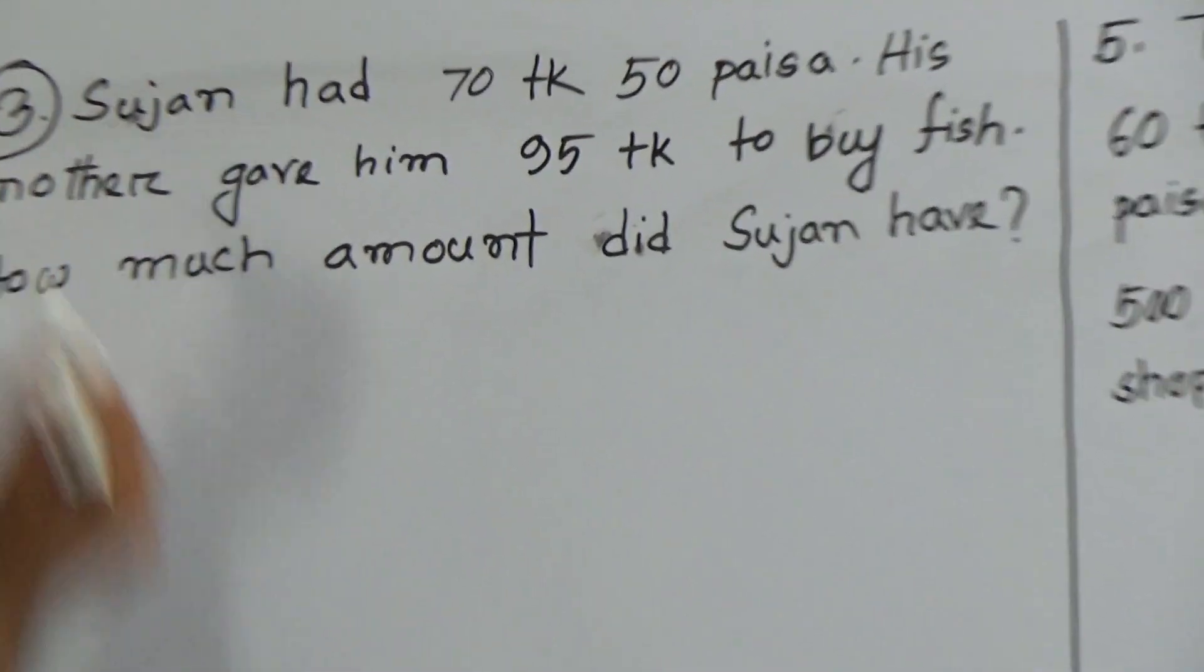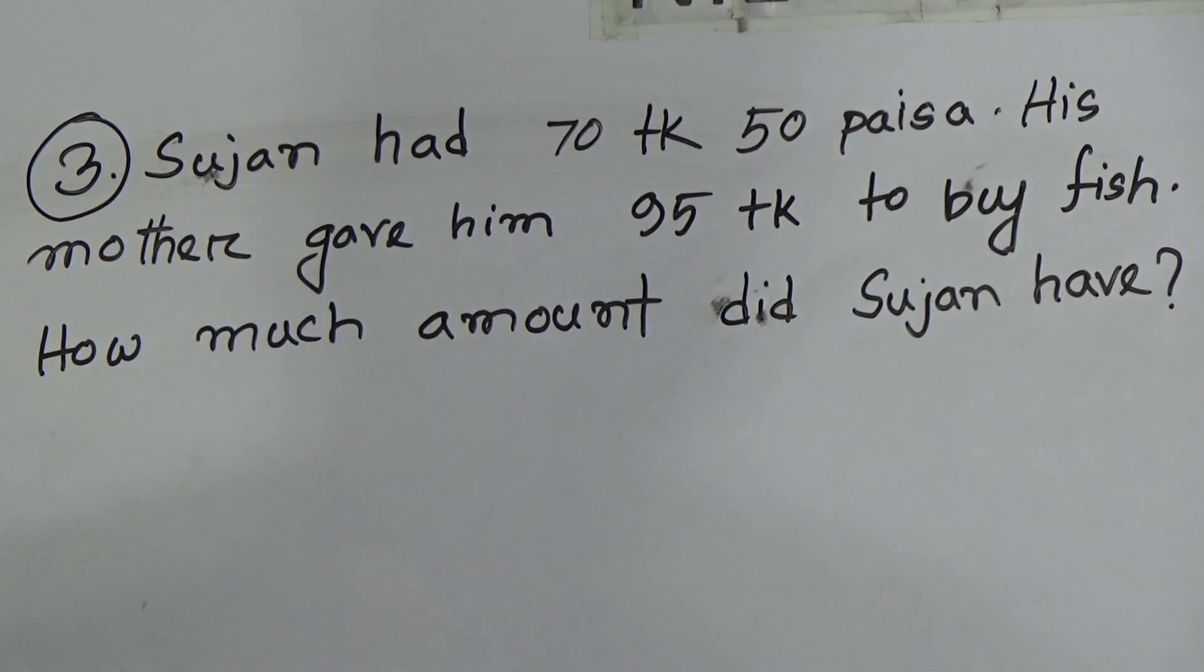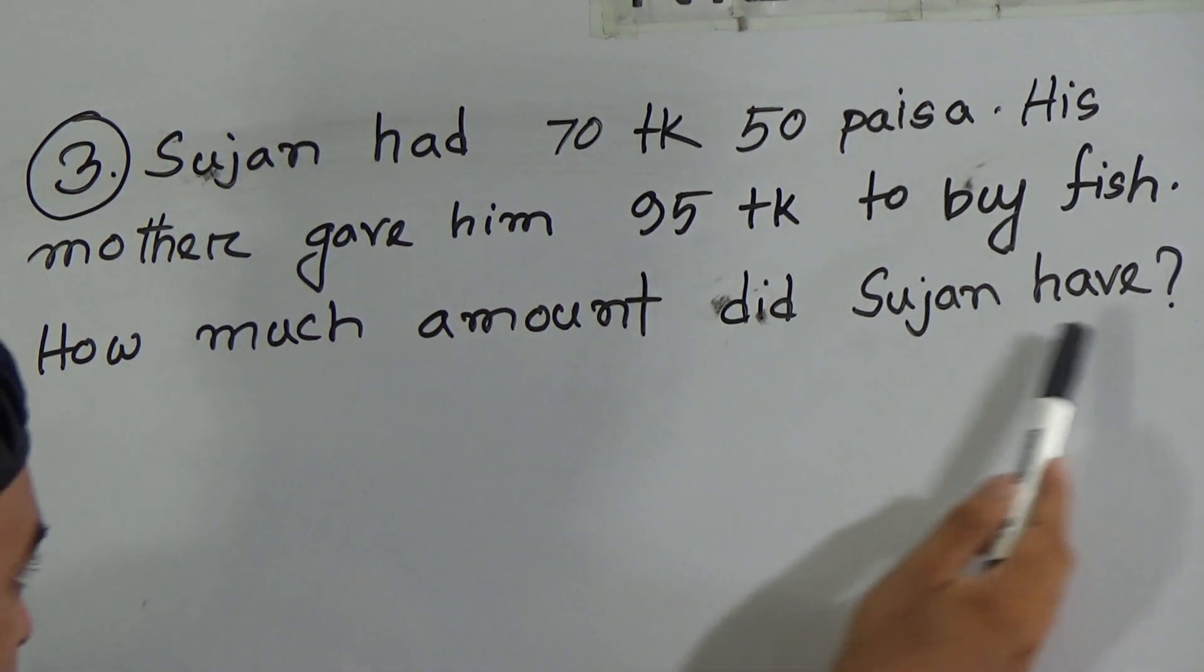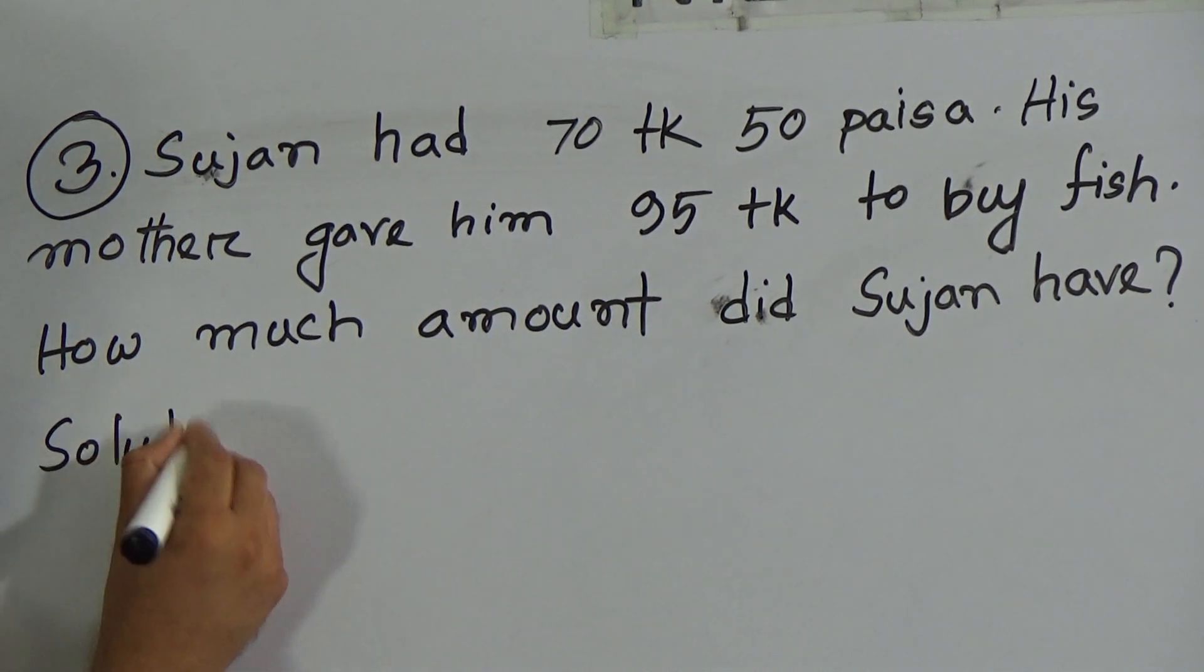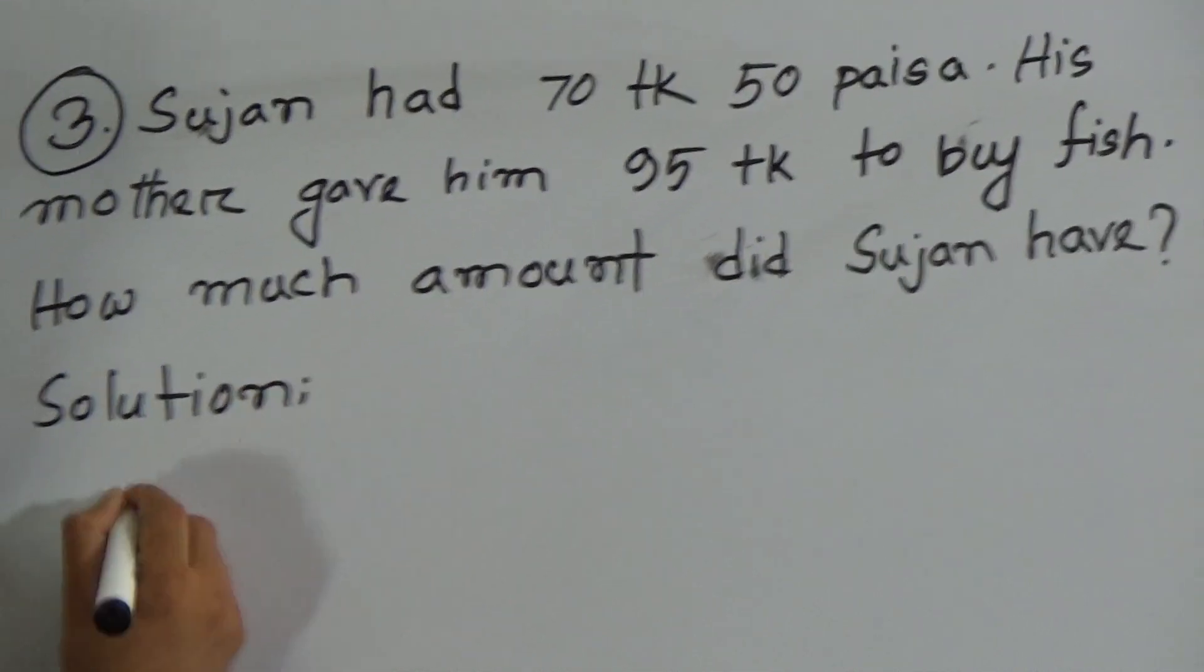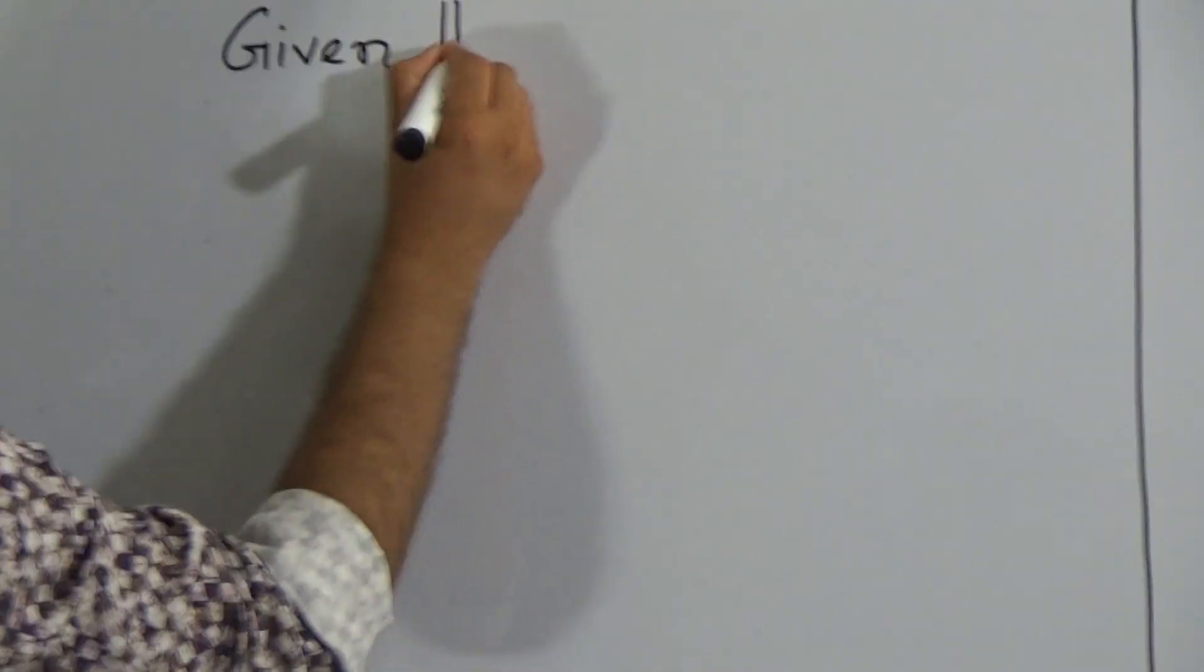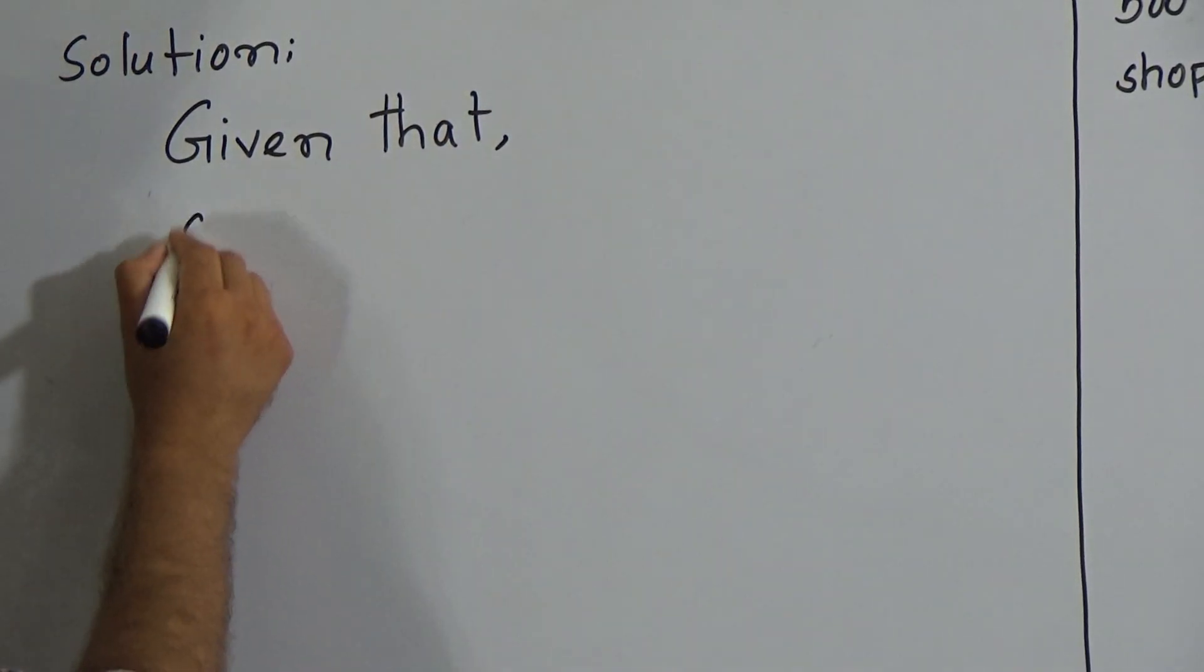Now let's start our class. Here is question number three: Sujan had 70 taka 50 poises. His mother gave him 95 taka to buy fish. How much amount did Sujan have? Here is the solution.